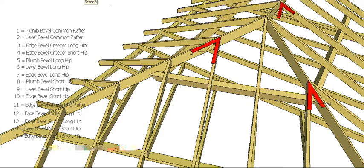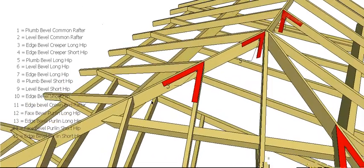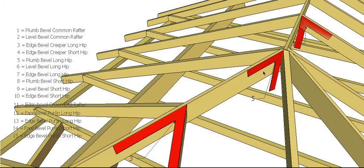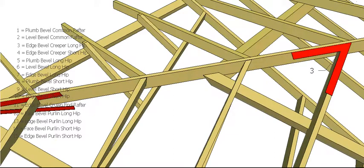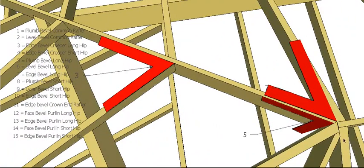We then need our hip bevels. This is our long hip, so the plumb bevel for our long hip, and then obviously at the other end, the level bevel for our long hip. We also need our edge bevel. Where this hip comes into this inner section here, we actually have to cut the same bevel on it twice. From the center, edge bevel long hip, and then we turn it over and cut it the other way.